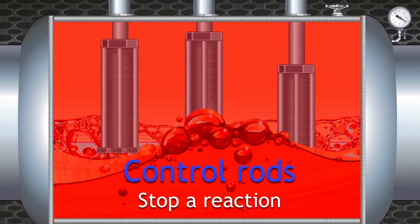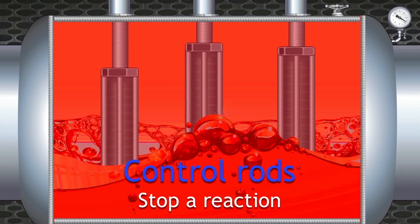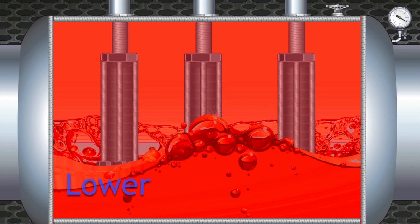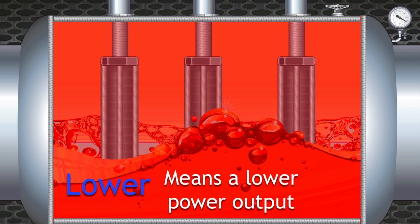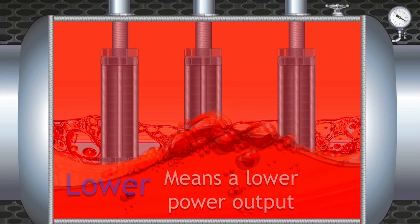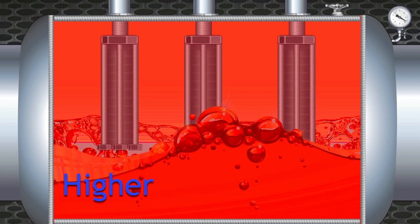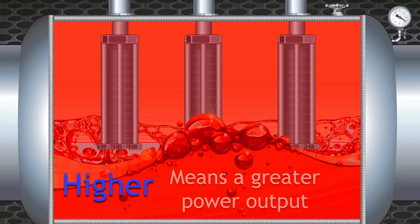During normal operation, they are raised and lowered accordingly to vary power output. The lower they are, the lower the rate of reaction, which means a smaller power output. The higher they are, the higher the rate of reaction, which means a greater power output.